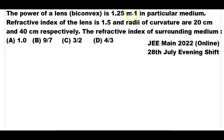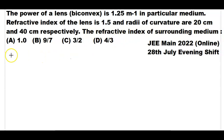The power of a lens is 1.25 meter inverse in a particular medium. The refractive index of the lens is 1.5 and the radii of curvature are 20 cm and 40 cm respectively. We need to calculate the refractive index of the surrounding medium, given that power is 1.25 meter inverse.